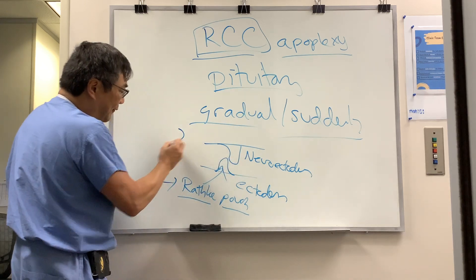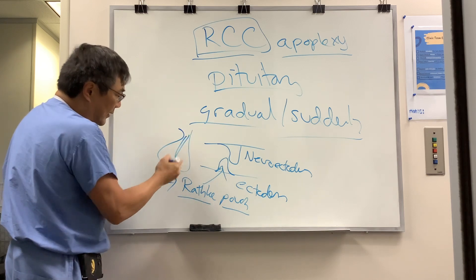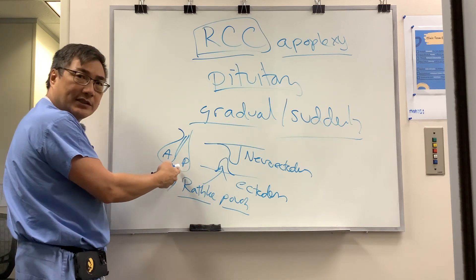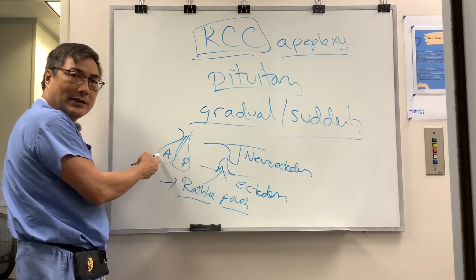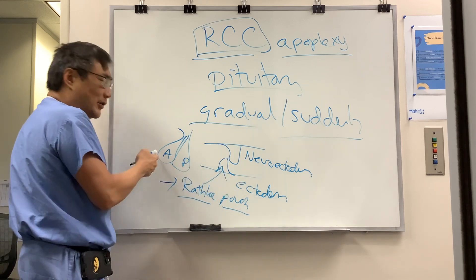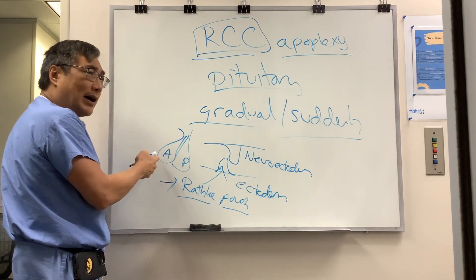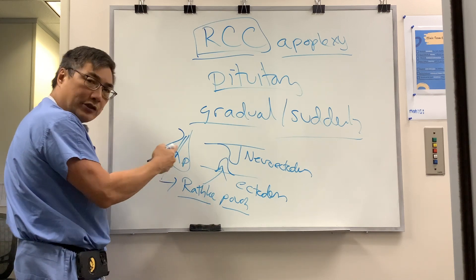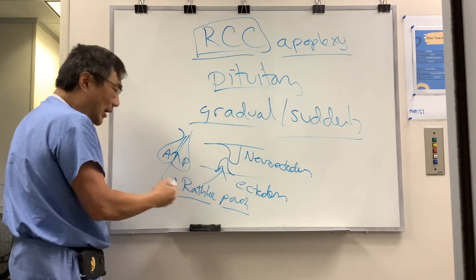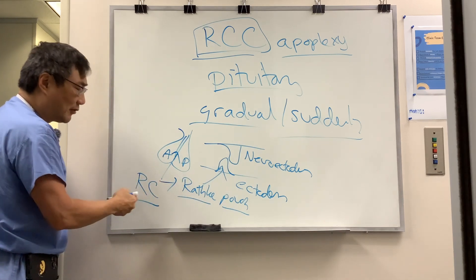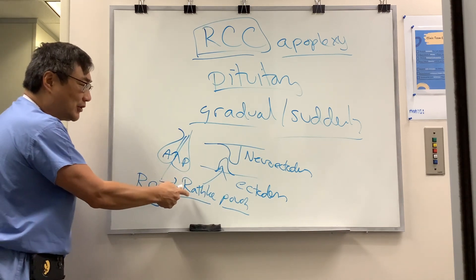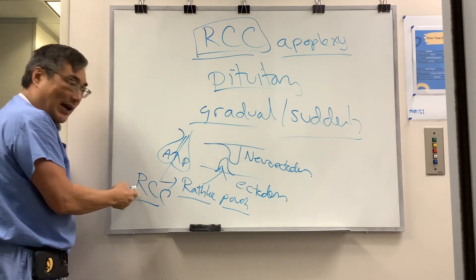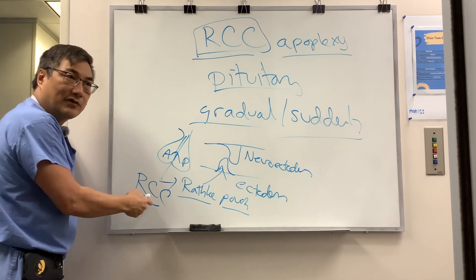When the two meet, they form the pituitary gland — anterior and posterior — formed by the neurohypophysis from neuroectoderm and the surface ectoderm-related anterior adenohypophysis. The cleft in the middle is a potential space between the two meetings of the embryologic tissue, and that is called the Rathke's cleft. So the Rathke's pouch can form the Rathke's cleft, and you can have a cyst in that potential space — called Rathke's cleft cyst.